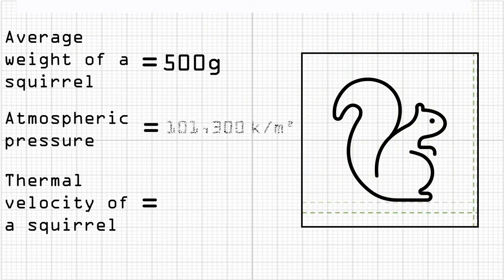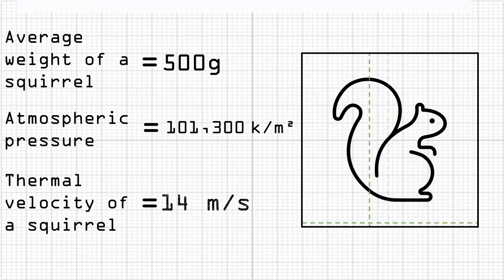Average weight of a squirrel: 500 grams. Atmospheric power burst number gives terminal velocity of a squirrel 14 meters per second. That's fast!